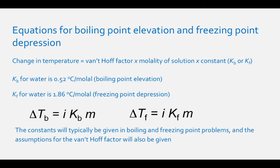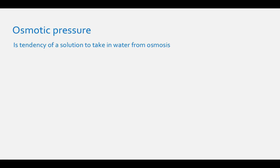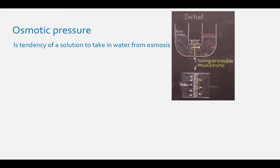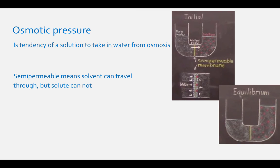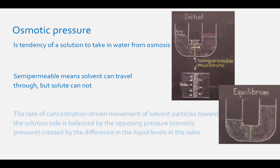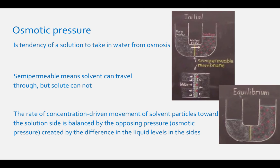The last colligative property to cover is osmotic pressure, defined as the measure of the tendency of a solution to take in water by osmosis. Osmosis is best illustrated by considering a semi-permeable membrane separating a solution from pure solvent, as shown in the following drawing. Semi-permeable means that the solvent can travel through the membrane but the solute particles cannot. Over time, the pure solvent travels toward the side with the highest concentration of solute—the solution side—until the concentration-driven movement is balanced by an opposing pressure created by the difference in liquid levels, and equilibrium is reached.